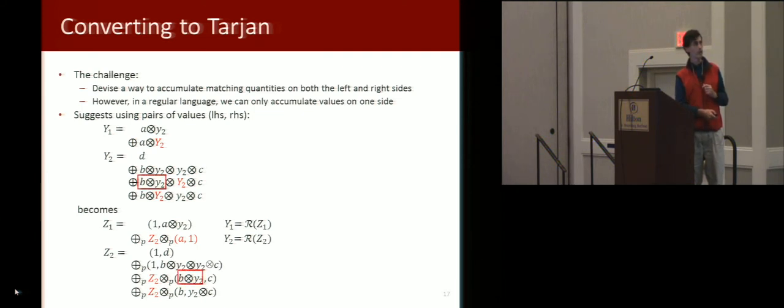So where we used to have B times Y2 here, we'll put that in the left half component of a pair on the right hand side of this term here. The C goes into the second component. And then, this is an LCFL, and this is left recursive, so in some sense it's regular.